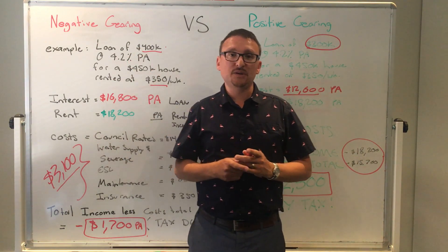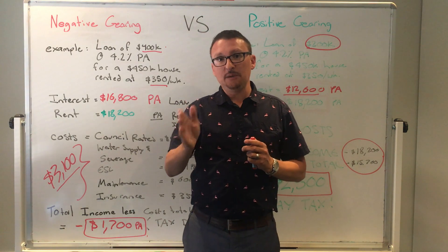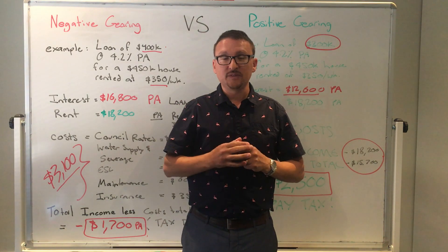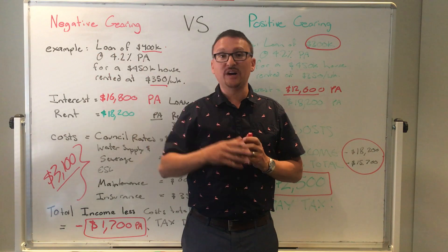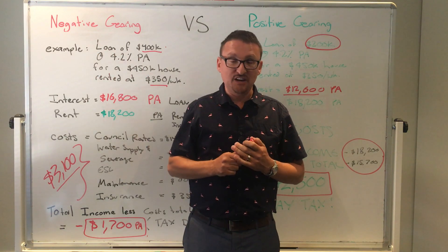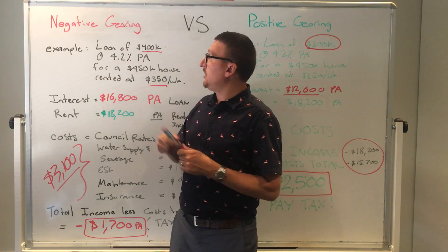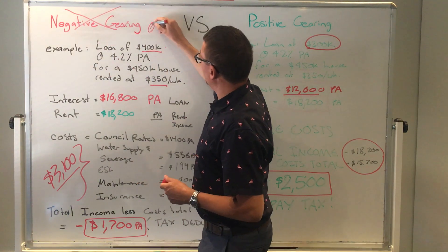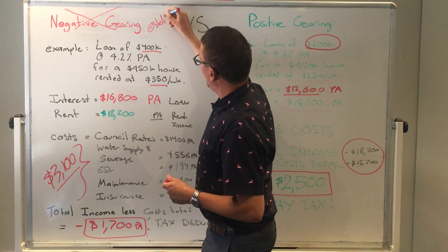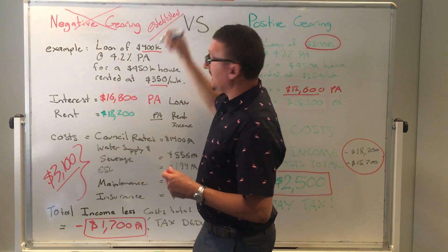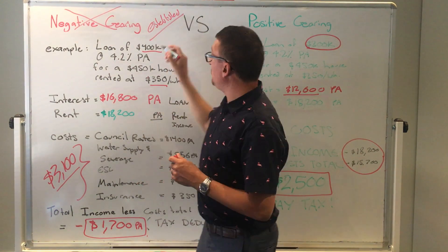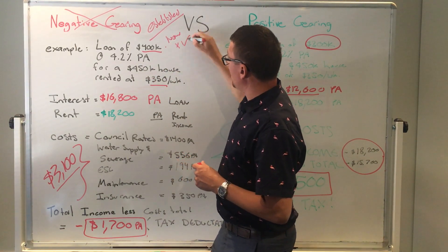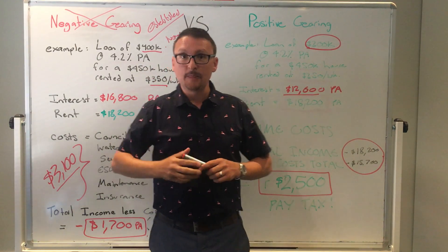The reason I'm doing this is because Labor versus Liberal have two different policies in place. It's almost inevitable that we may find ourselves with a Labor government next year, and they're talking about abolishing negative gearing on established homes. You'll still be able to claim on new homes, but you will not be able to claim on established homes.